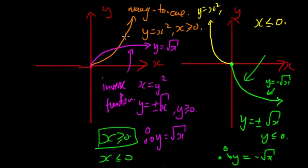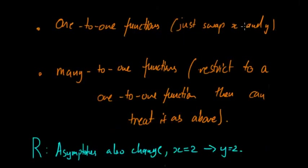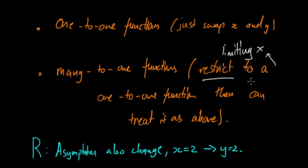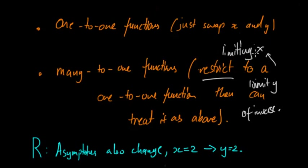In summary: if you have a one-to-one function, you can just swap x and y — don't worry, the inverse will always be a function. However, if you have a many-to-one function, restrict it to a one-to-one function first and then treat it as above. You restrict it by limiting the domain (x), which will in turn limit the range (y) of the inverse, because the domain and range are swapped.